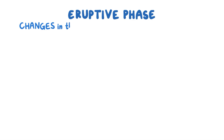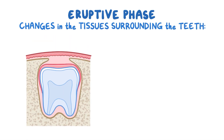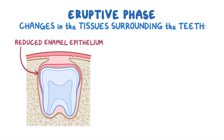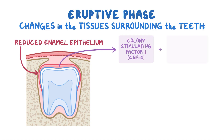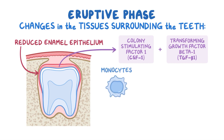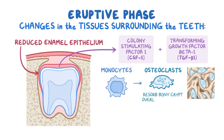Several changes are happening in tissues surrounding the teeth that help in the eruptive phase. In the region above each tooth, a path called the eruptive pathway is cleared through the bone and connective tissue. The reduced enamel epithelium covering the dental follicle secretes colony-stimulating factor 1 (CSF1) and transforming growth factor beta 1 (TGF-beta 1) into the surrounding tissue. The CSF1 and TGF-beta 1 attract monocytes that then differentiate into osteoclasts, which eat away or resorb the part of the bony crypt overlying the tooth.